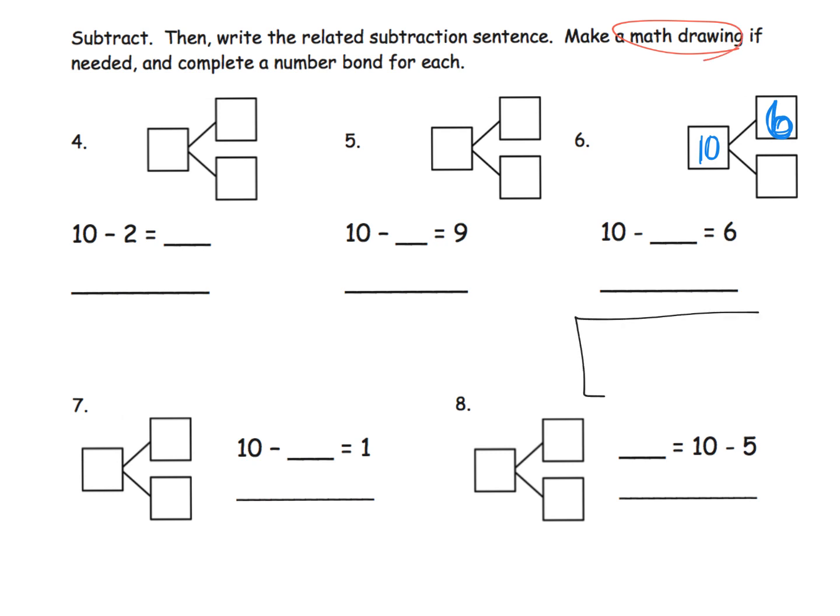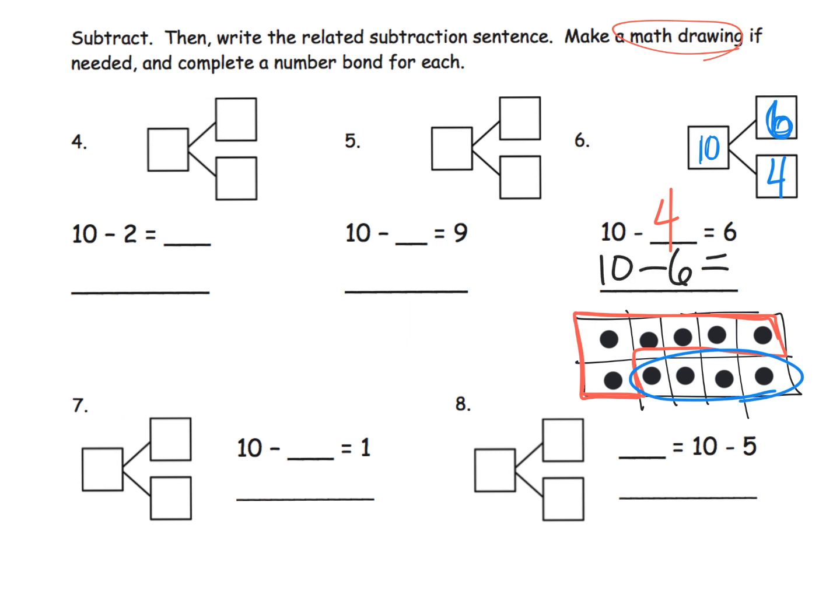We've got 10 minus blank equals 6. We want students to begin recognizing they would put the 10 here because it's the whole. The 6 is going to be one of the two parts. Students can maybe count with their fingers, use drawings, definitely use the 10 frame. The 10 frame would look like this: 1, 2, 3, 4, 5, 6, 7, 8, 9, 10. They could say, here's 6, so what are we missing? We're missing the 4. So the 4 would go right here, and the number sentence would be 10 minus 4 equals 6 and 10 minus 6 equals 4.